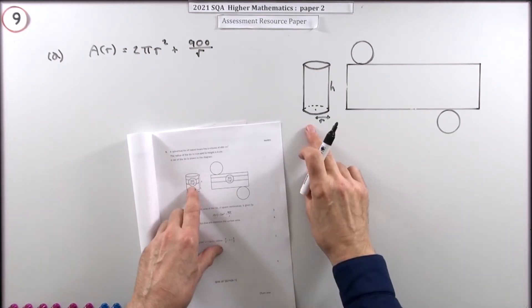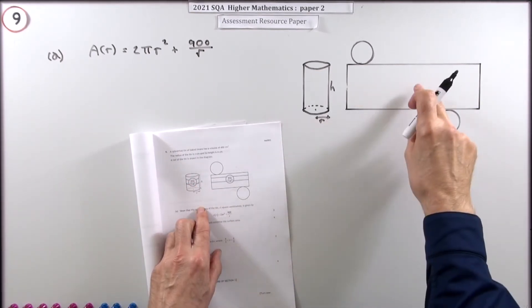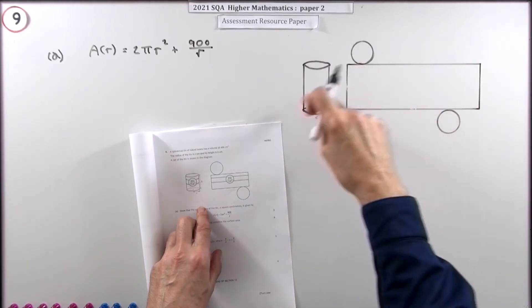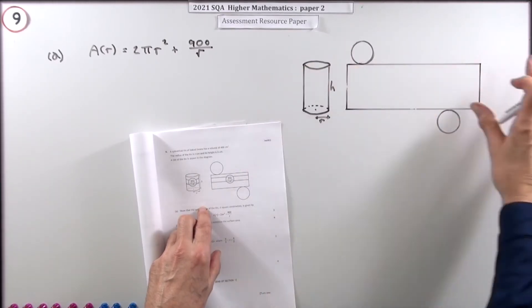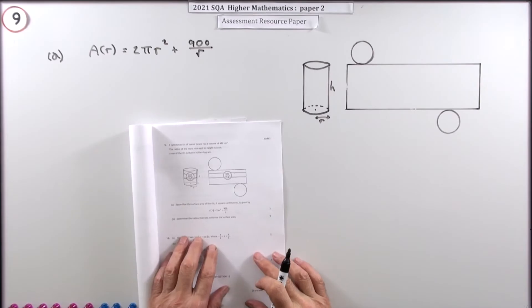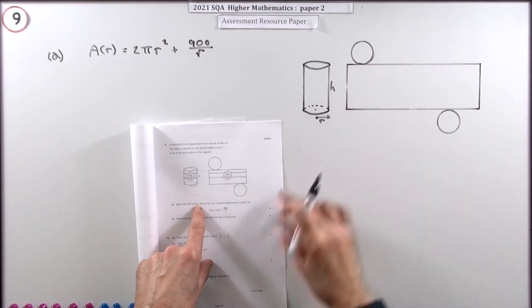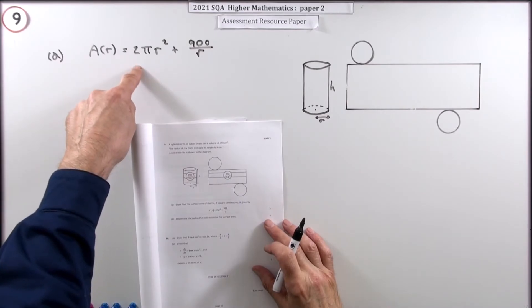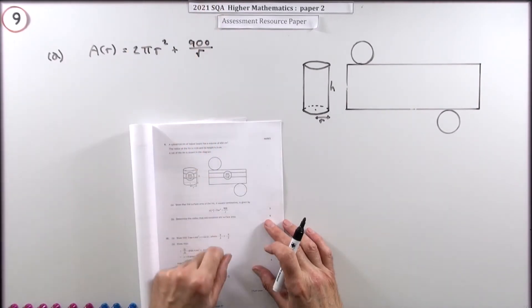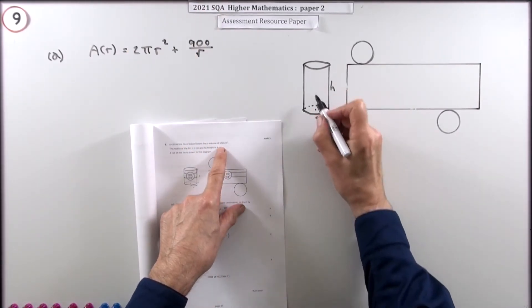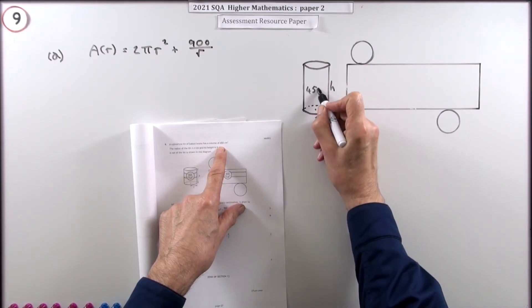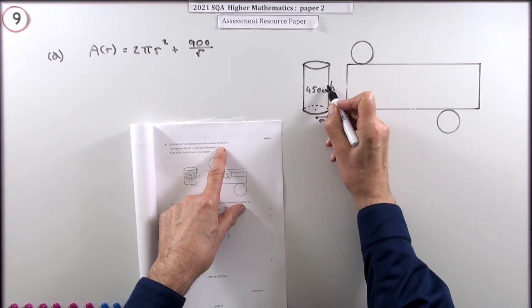So it says you've got a cylindrical tin, and there's the net at the side. If you were to cut around the top and the bottom and fold it all out flat, that's the shape you would get. That's the surface area. It says show that the surface area is given by this expression, along with the additional information that the volume of it is 450 centimeters cubed.